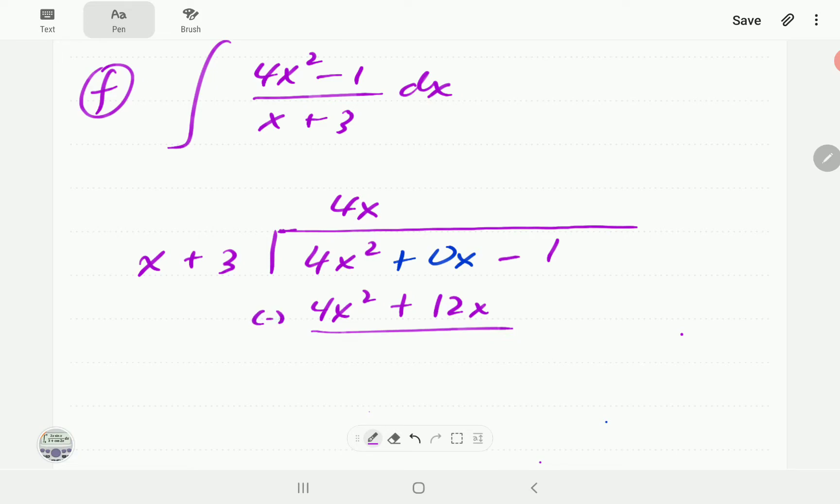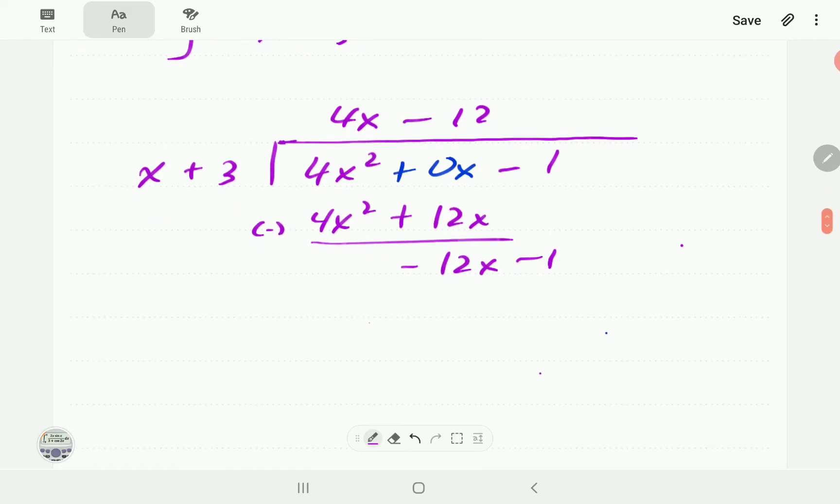Then we subtract so the 4x² terms will cancel out. If we subtract we're going to get minus 12x. Then we bring down negative 1. Then this time x goes into minus 12x minus 12 times. Then we say minus 12 times x, so that's going to give us minus 12x. Then we say minus 12 times 3 that is going to give us minus 36.